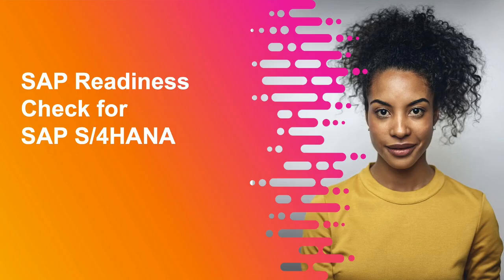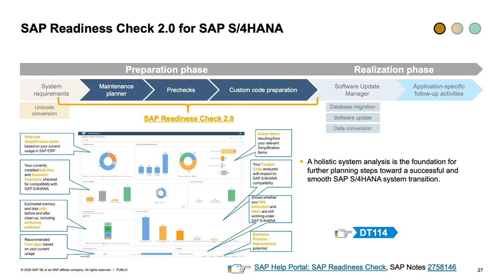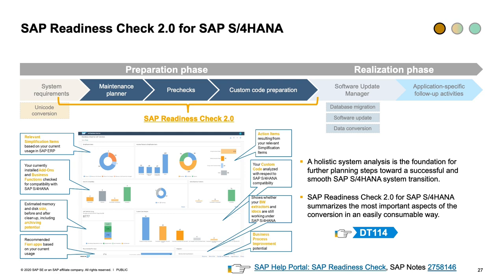The SAP Readiness Check is a service that analyzes your source system and provides information about its status — sizing recommendations, which simplification items are active, effort estimates for different areas, and other useful information. It is the holistic system analysis and foundation for all planning steps. You should always start with it regardless of whether you're doing a conversion or a greenfield. More information is in session GT114.